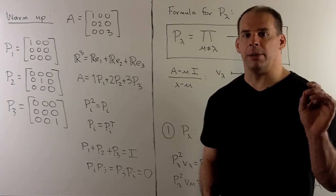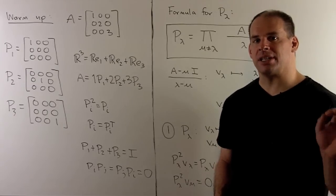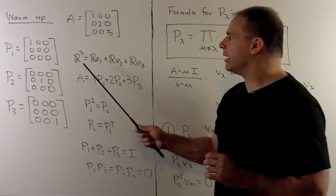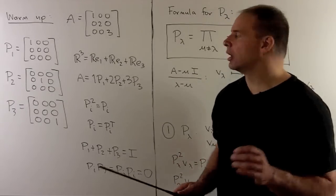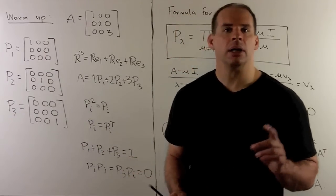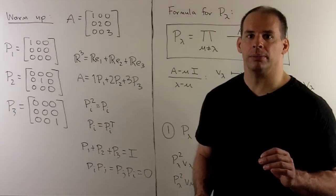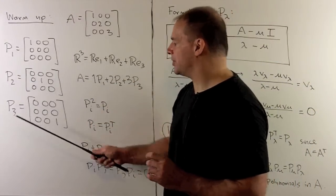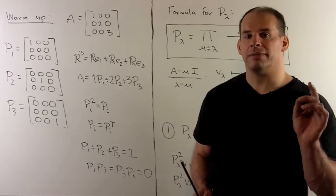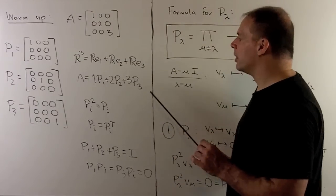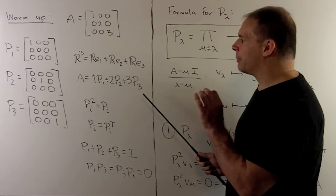The model to keep in mind: let A be the diagonal matrix with entries 1, 2, 3. A basis of eigenvectors is given by the standard basis, so we have R^3 written as an orthogonal direct sum of eigenspaces. The associated projections are given by three matrices. Each matrix equals its own square, and each is symmetric, so each is a projection operator. The sum of the matrices equals the identity matrix, the product of any two is zero, and we can write A as a sum of products of each eigenvalue with its associated projection. That's our spectral decomposition in this case.